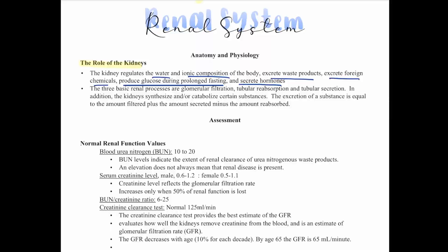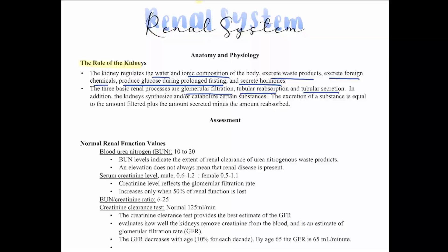The three basic renal processes are glomerular filtration, tubular reabsorption, and tubular secretion. In addition, the kidneys synthesize and catabolize certain substances. The excretion of a substance is equal to the amount filtered plus the amount secreted minus the amount reabsorbed.